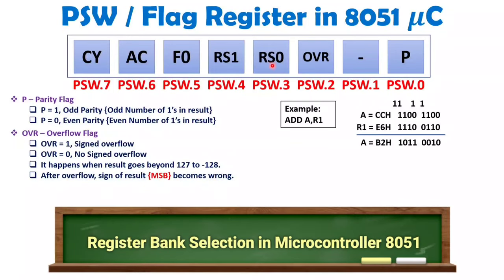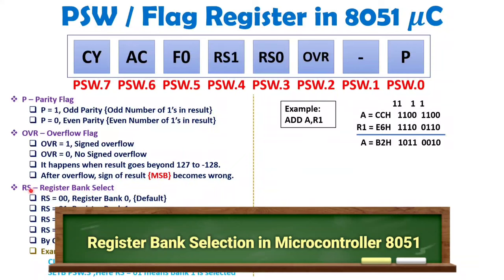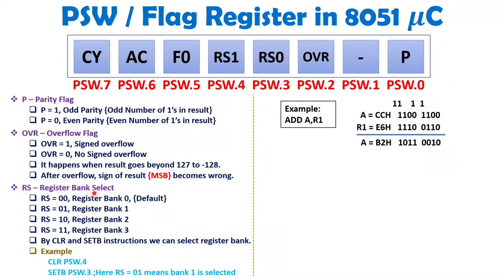Next are RS0 and RS1, the register bank select bits. With 8051 we have 4 register banks: Bank 0, Bank 1, Bank 2, and Bank 3. Each register bank has 8 registers named R0 to R7, giving a total of 32 registers available for programming. By default RS bits are 00, selecting register bank 0. If a programmer wants a different bank, they change the RS bits. Since PSW is bit-addressable, we use CLR and SETB instructions to select the register bank.